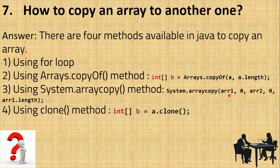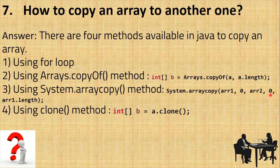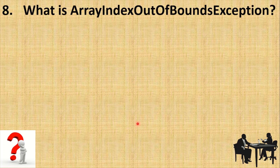The third method is System.arraycopy(). This method resides in the System class and takes several arguments: the source array, the starting index in the source, the destination array, the starting index in the destination, and the number of elements to copy. The fourth method is the clone() method, which is provided in the Object class and can also be used to copy one array to another.